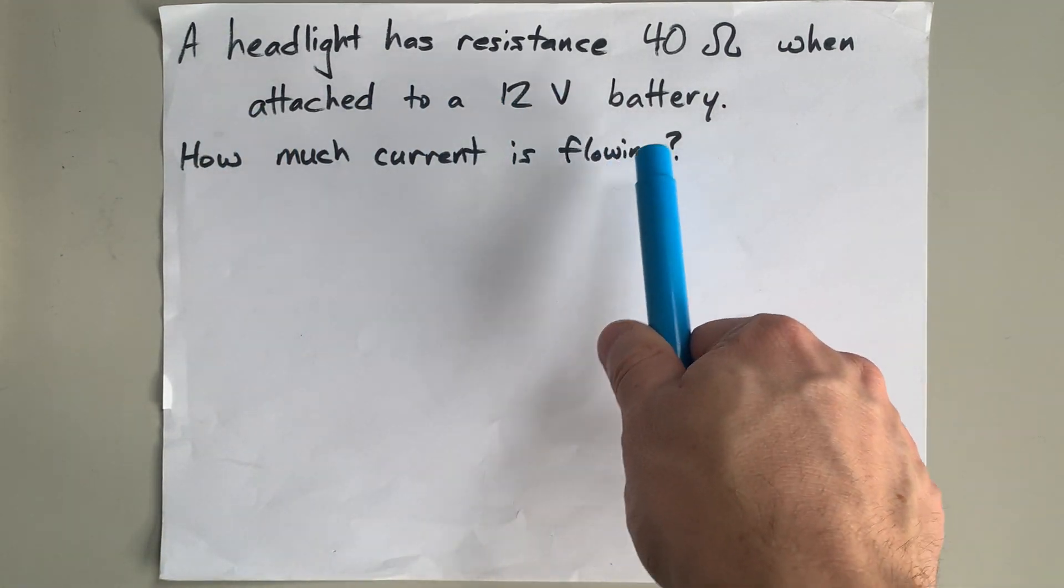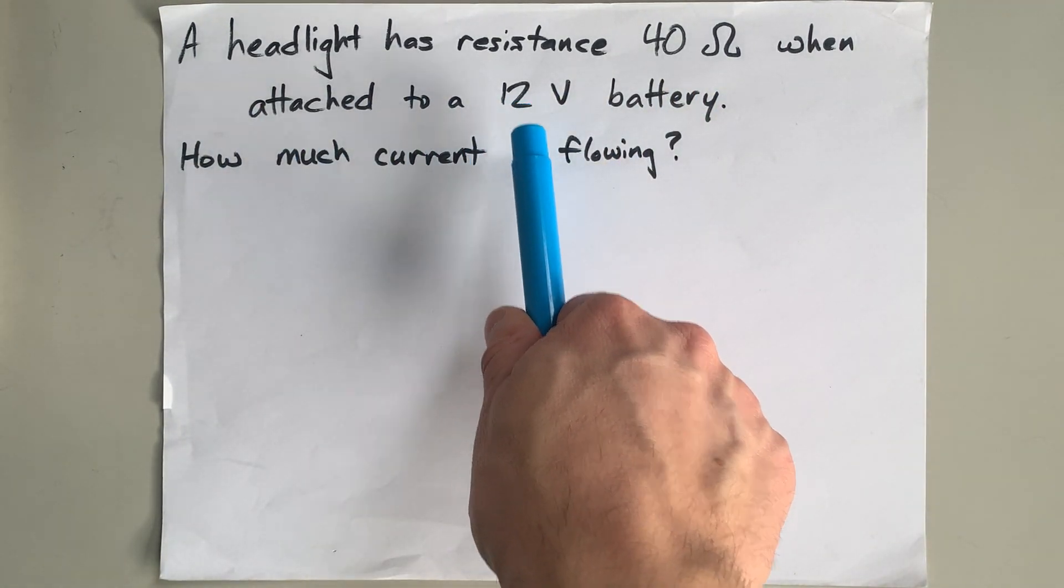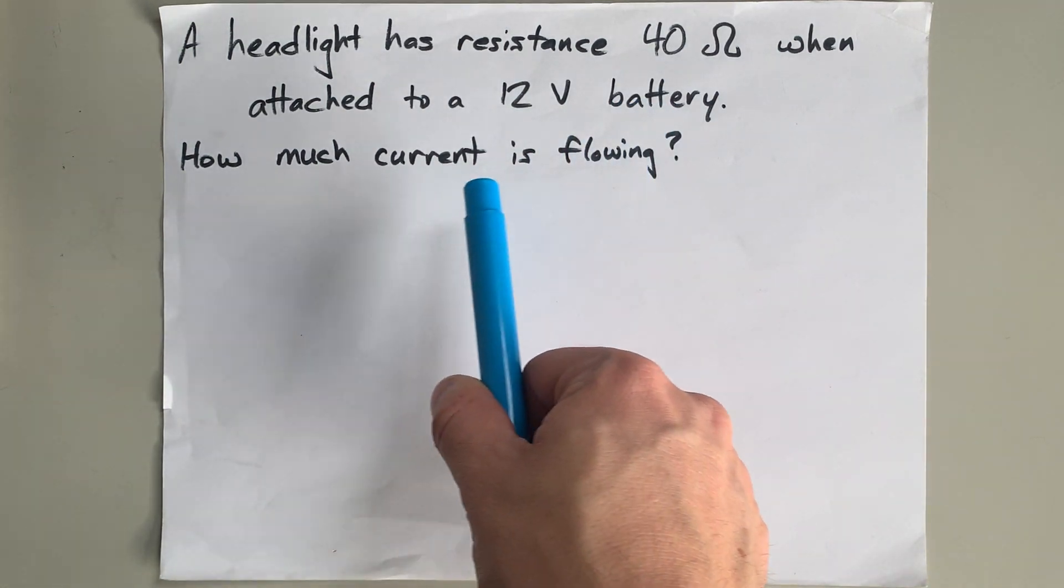A headlight has a resistance of 40 ohms when attached to a 12-volt battery. How much current is flowing?